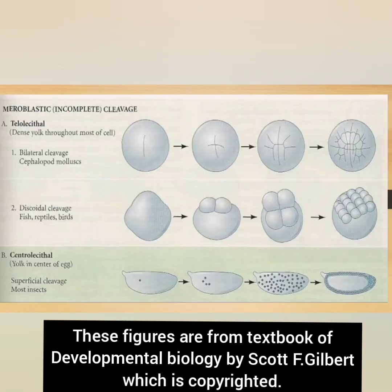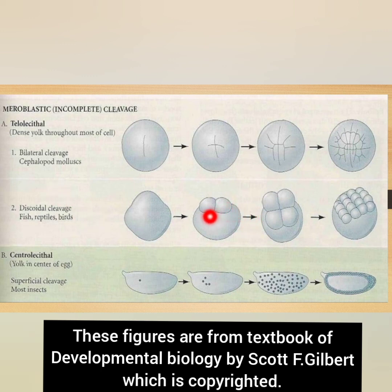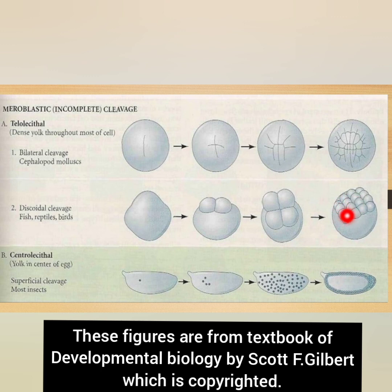Next is meroblastic or incomplete cleavage, further divided into telolecithal and centrolecithal cleavage. In telolecithal type, one cleavage pattern is bilateral cleavage — similar to that in holoblastic cleavage, but here it is incomplete. The other pattern is discoid cleavage, where cleavage remains restricted to a disc-shaped active cytoplasm at the animal pole known as the blastodisc. The bulk of the egg contains yolk and does not undergo division. Examples are fish, reptiles, and birds.